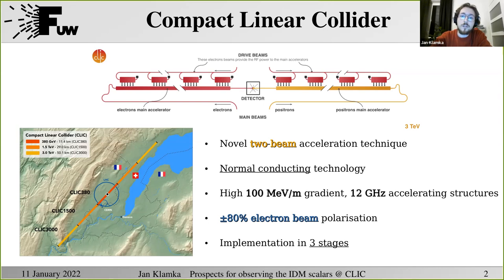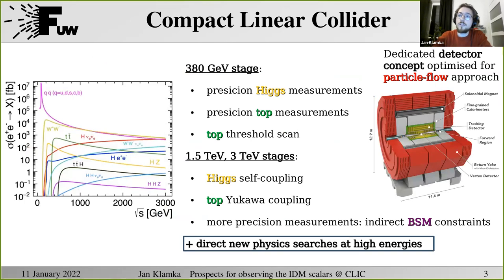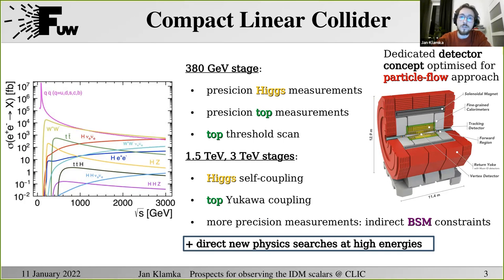This is a normal-conducting technology, so it can operate at room temperature, and it provides a high gradient of 100 MeV/m using 12 GHz accelerating structures. Plus/minus 80% polarization of the electron beam is possible. The implementation assumes three stages: first at 380 GeV center-of-mass collision energy, and the next two at 1.5 and 3 TeV. There is also a dedicated detector concept for CLIC — the CLIC detector — optimized for the particle flow approach. The main focus will be Higgs precision measurements, especially at the first running stage, but also precision top quark measurements. The high-energy stages open access to Higgs self-coupling, top Yukawa coupling, and many precision measurements via indirect BSM constraints, and also directly probing new physics.